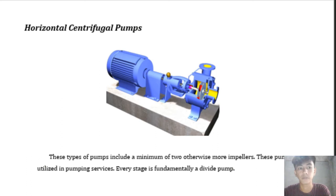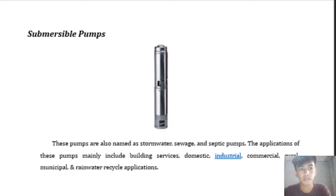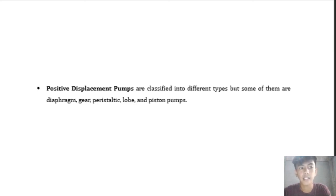Horizontal centrifugal pumps include a minimum of two or more impellers; these pumps are utilized in pumping services and every stage is essentially a separate pump. Submersible pumps are also named as stormwater, sewage, and septic pumps, and their applications include building services, domestic, industrial, commercial, rural, municipal, and rainwater cycle applications. The second type of pump is the positive displacement pump, which is classified into types including diaphragm, gear, peristaltic, lobe, and piston pumps.